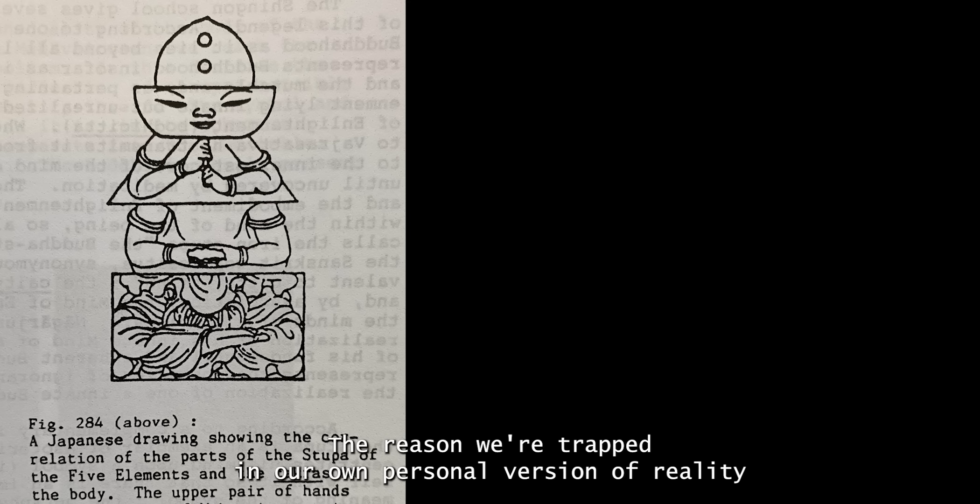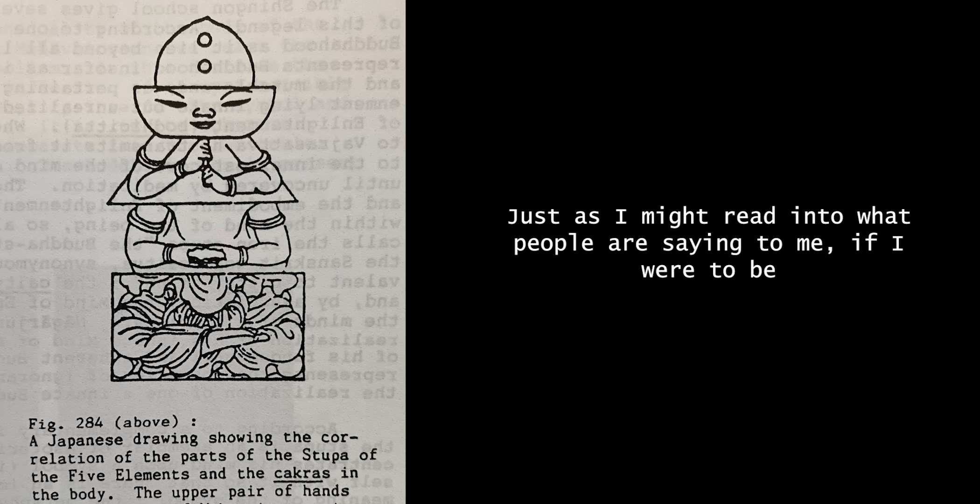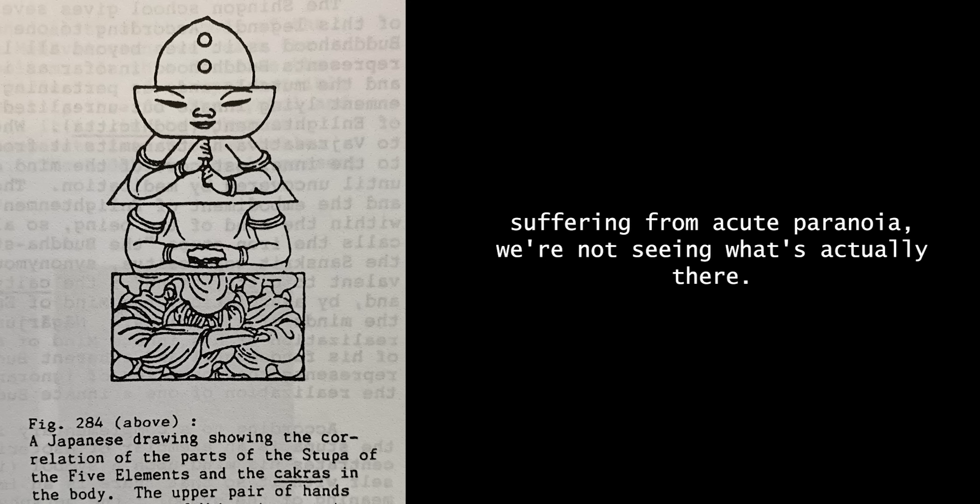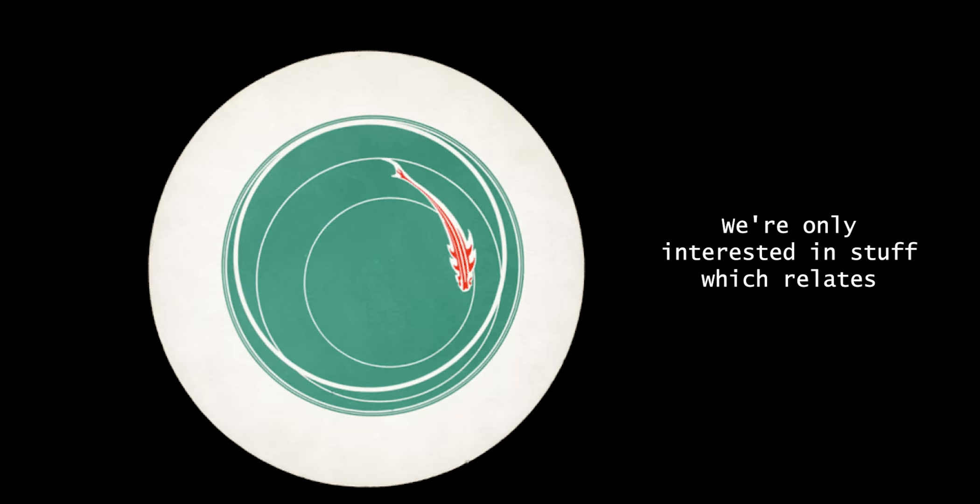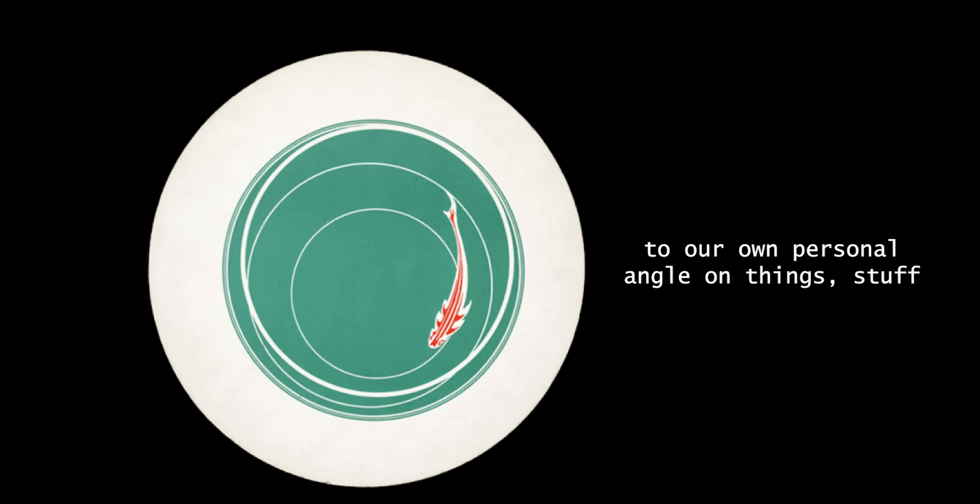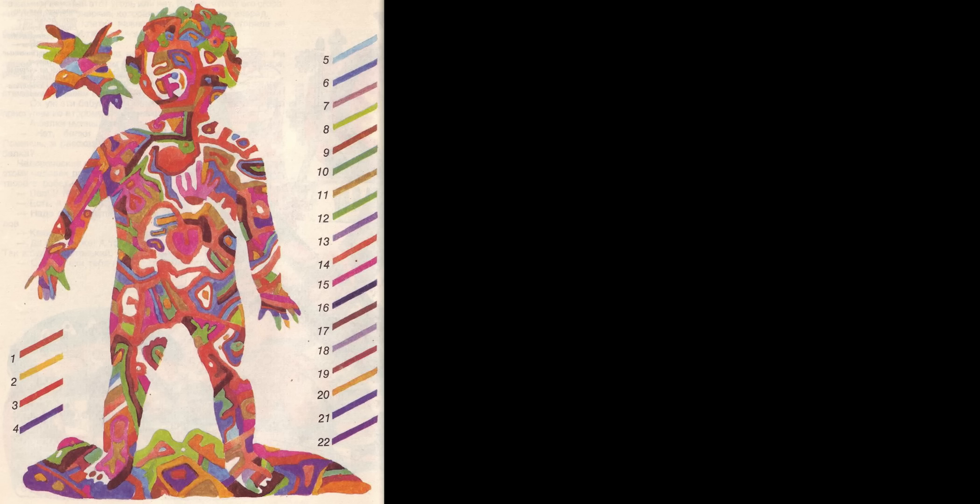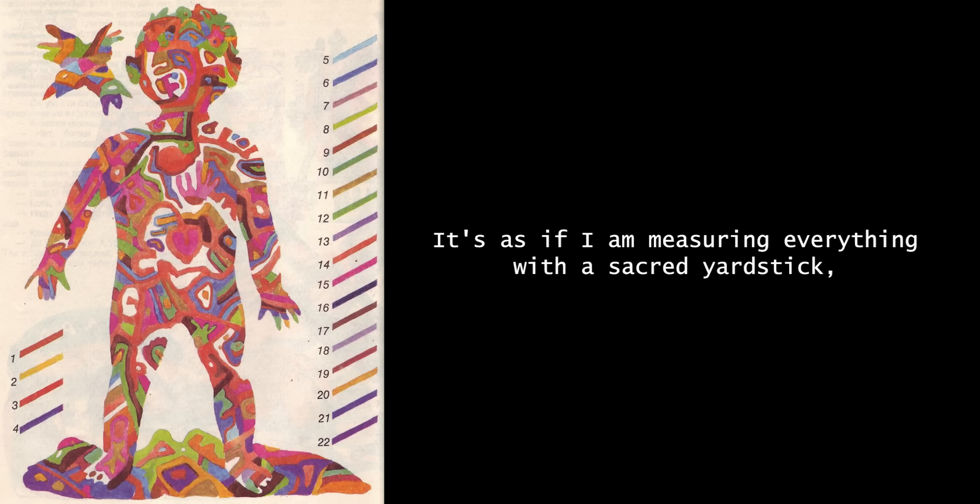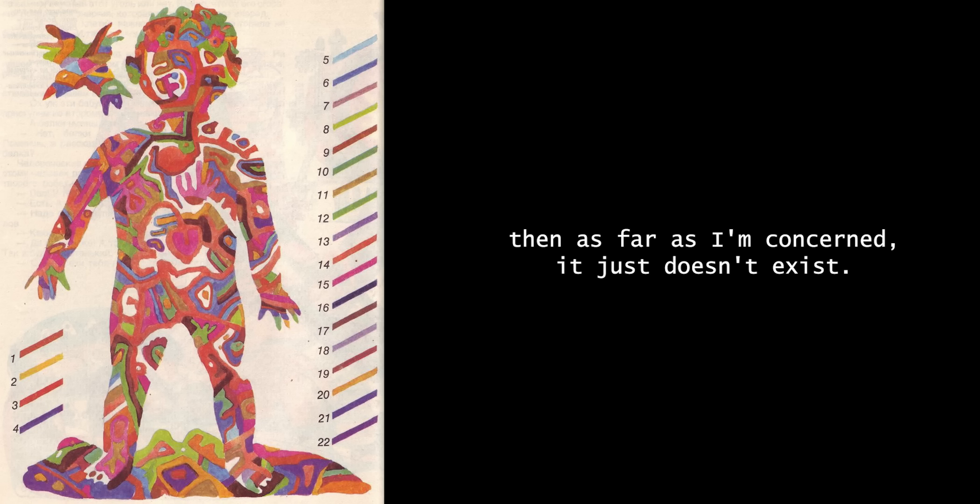The reason we're trapped in our own personal version of reality is because we're always reading into it, just as I might read into what people are saying to me if I were to be suffering from acute paranoia. We're not seeing what's actually there. We're seeing what seems to be there as far as we're concerned. We're seeing our own fears and hopes reflected back at us. When it comes right down to it, we're only interested in stuff which relates to our own personal angle on things, stuff which relates to our particular perceptual cognitive bias. It's as if I am measuring everything with a sacred yardstick. And if there is something that can't be measured with this standard, this yardstick, then as far as I'm concerned, it just doesn't exist.